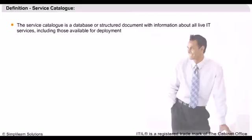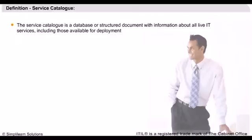While it is essential that all live IT services should find a place in the service catalogue, it is also necessary that customers and users should have visibility of new services or changed services that will be available in the near future. Hence, services available for deployment into live environments are also generally included in the service catalogue. Service portfolio consists of three parts: pipeline services, service catalogue, and retired services.